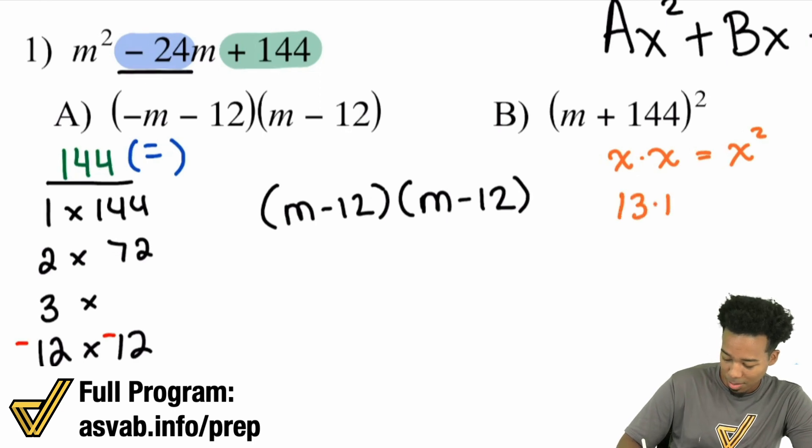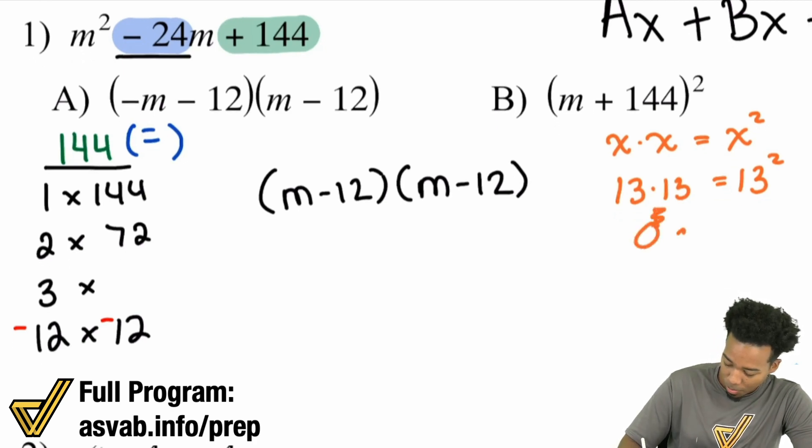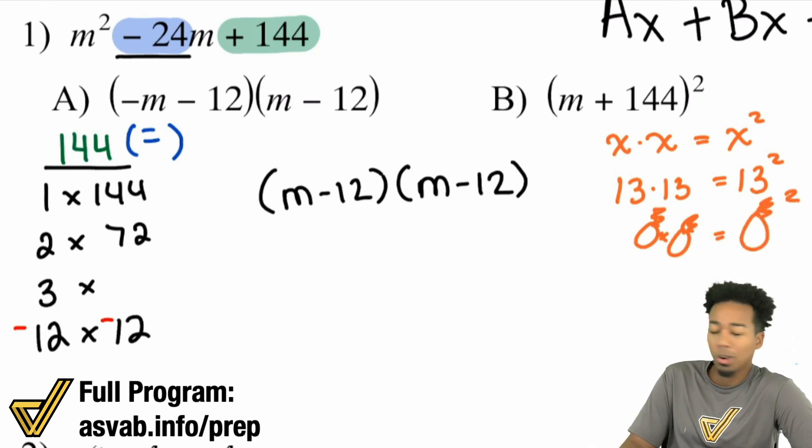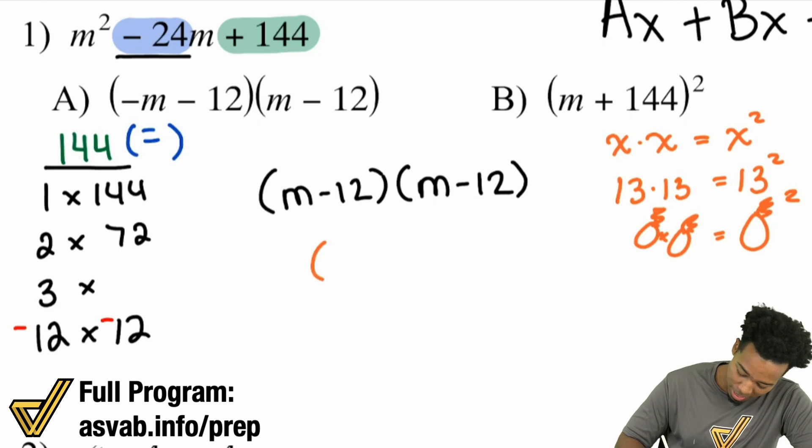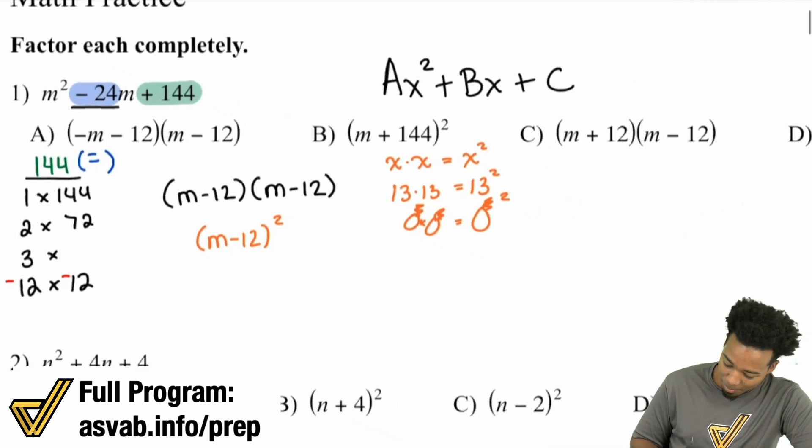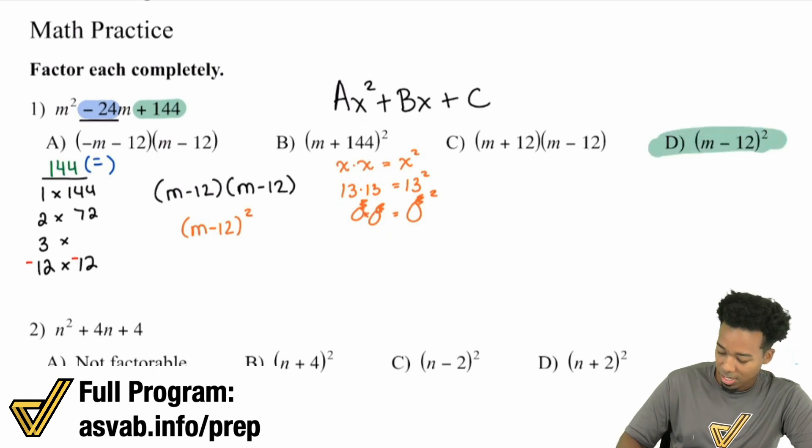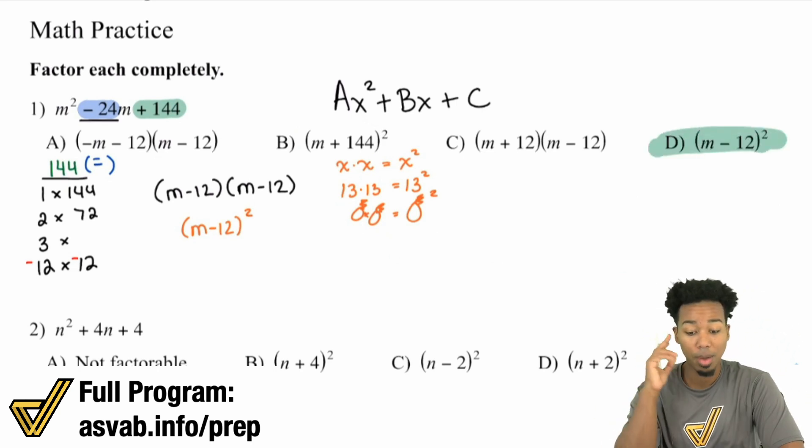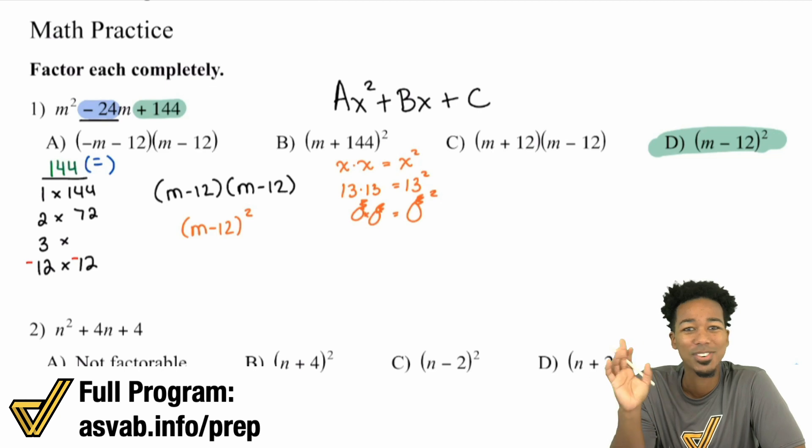What if we have 13 times 13? That's 13 squared. What if we have a pineapple times a pineapple? Well, a pineapple times a pineapple, that's a pineapple squared. And so what is M minus 12 times M minus 12? M minus 12 squared. And that's all this is, my math part of people. It is M minus 12 squared. The answer here is D. And that's all this short video is about.